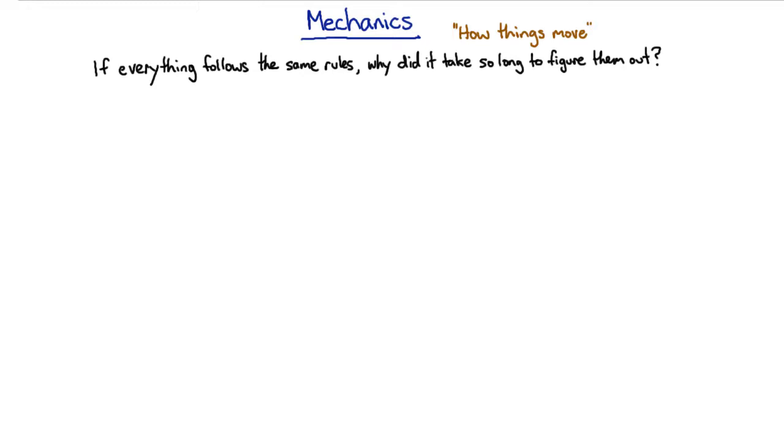The first is that a rock and a waterfall and a feather and a fire and a star all behave extremely differently. And the main reason for that is that even though they follow the same rules, they're composed of very different things, and they have very different environments, which means that when they follow those rules, they do very different things.